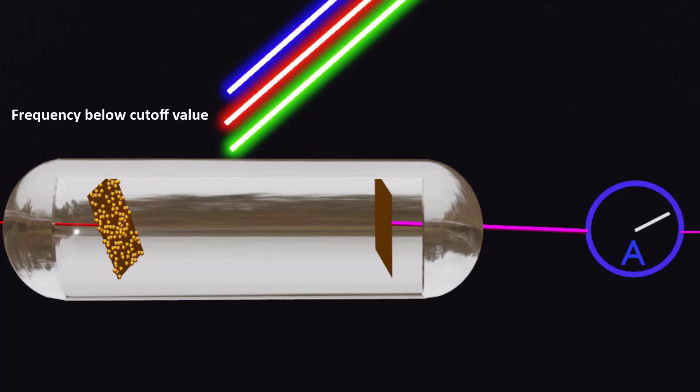If the frequency of the incident light is below a certain value, no photoelectric effect occurs, even with high intensity light.